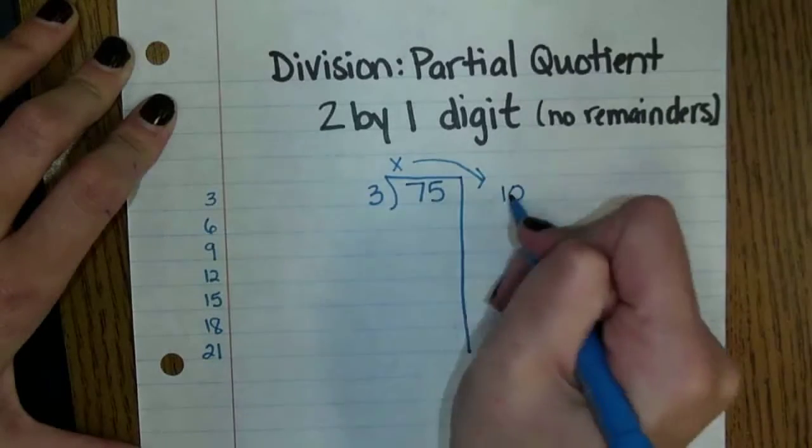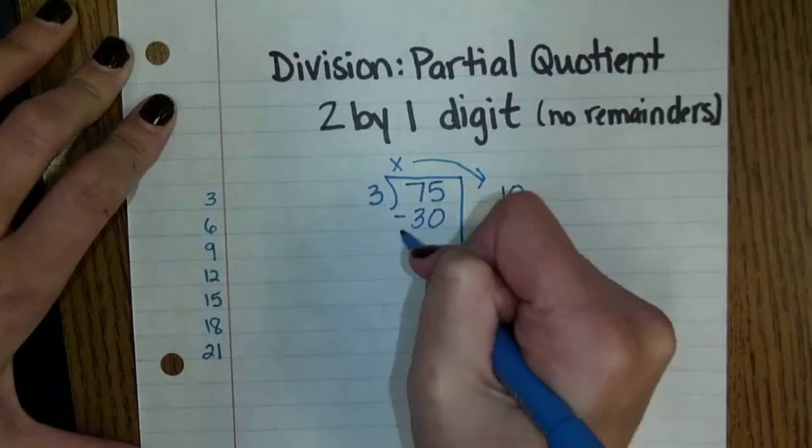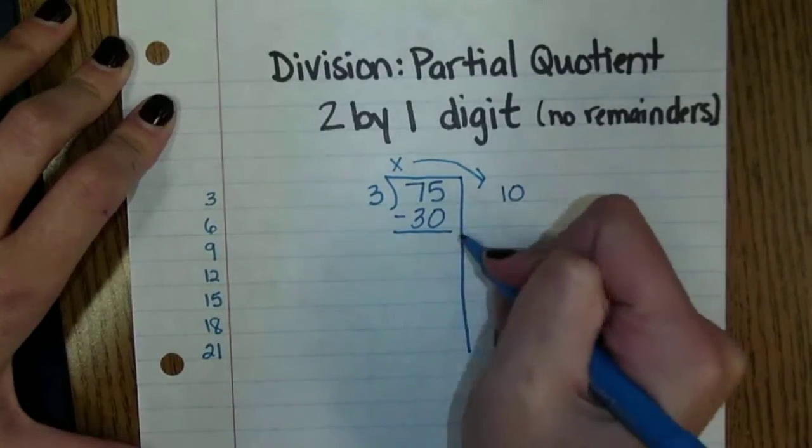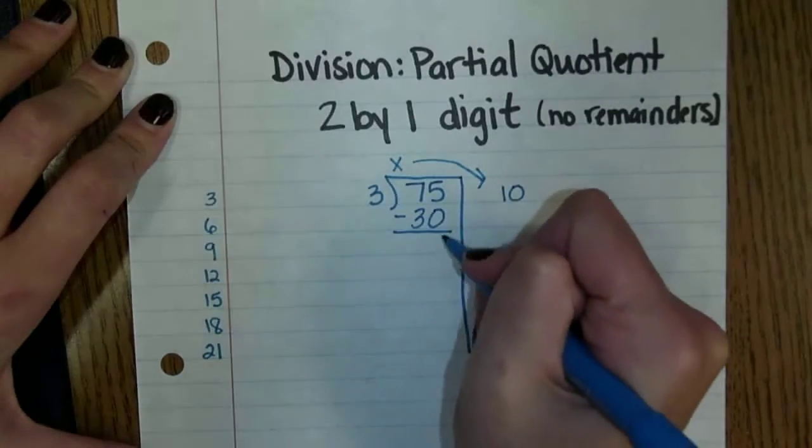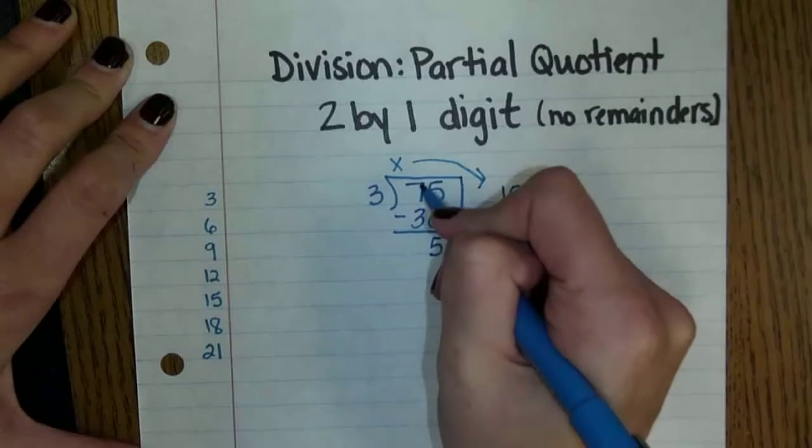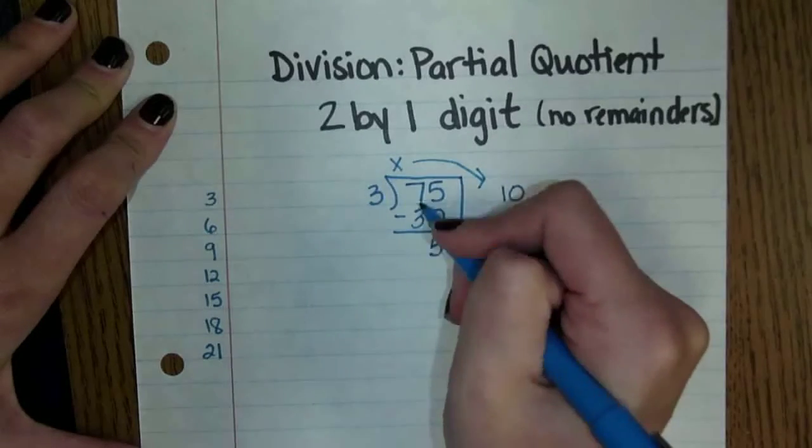After I've done that I know that 3 times 10 is 30. I'm going to put 30 here and just subtract this just to make the number smaller and easier to work with. 5 minus 0 is 5 and 7 minus 3 is 4.